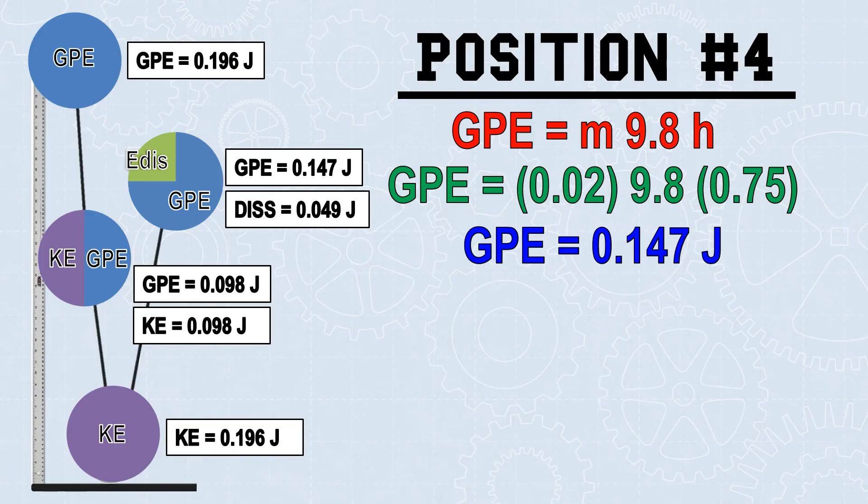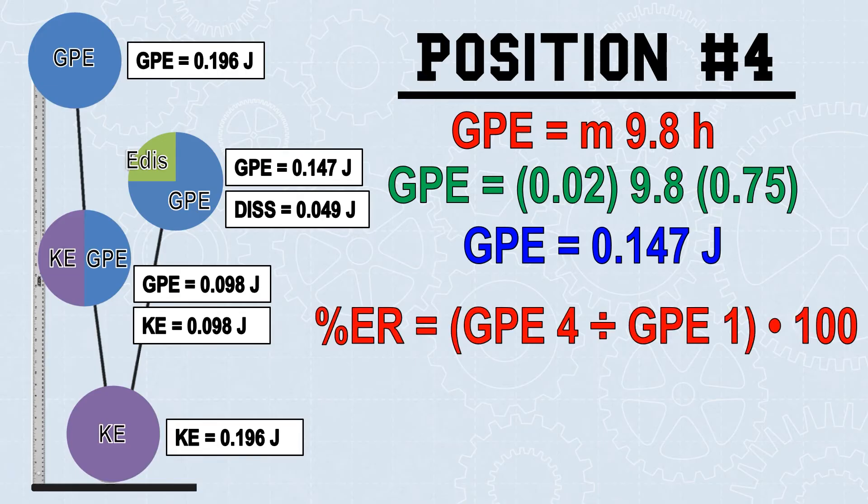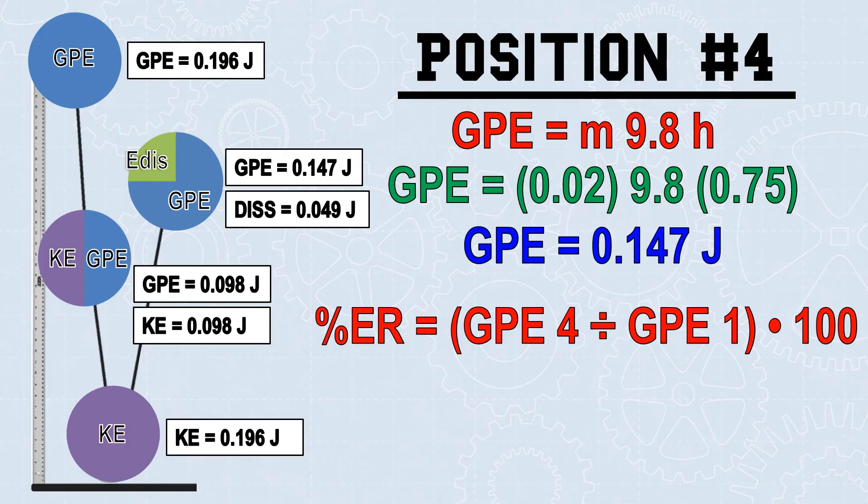We can find how efficient that bounce was by calculating the percent of energy recovered. We do this by taking the gravitational potential energy at position 4 divided by the gravitational potential energy of position 1 times 100. Plug in our given information, use a little order of operations, and we found that this ball is 75% efficient. Which is why it bounced to 75% of its height.